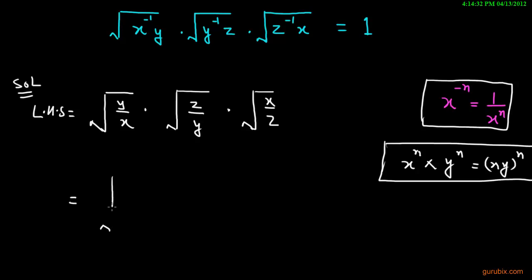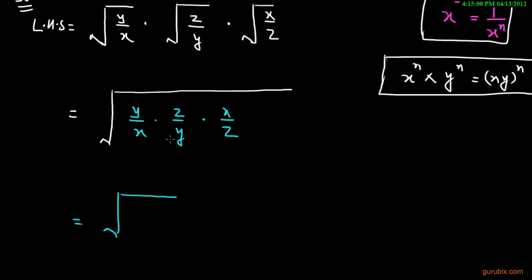Therefore, the expression will be y over x into z over y into x over z. Now we can cancel out x with x, z with z, y with y, then we get 1 over 1.